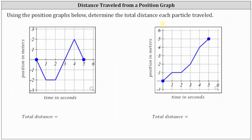Starting with particle one, notice for the first second, the particle travels from position zero to a position of negative two meters, and therefore the particle travels two meters in the negative direction during the first second. Then from one second to two seconds, the position remains negative two, and therefore the particle traveled zero meters.